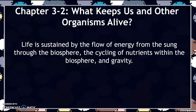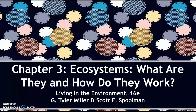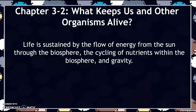Hello AP Environmental Science students. In today's screencast we're going to continue talking about chapter 3, which is ecosystems — what are they and how do they work. All of today's notes are based off of 'Living in the Environment,' the 16th edition by Miller and Spoolman. Chapter 3, section 2: the main idea is what keeps us and other organisms alive. The key idea is that life is sustained by the flow of energy from the Sun through the biosphere, the cycling of nutrients within the biosphere, and gravity.